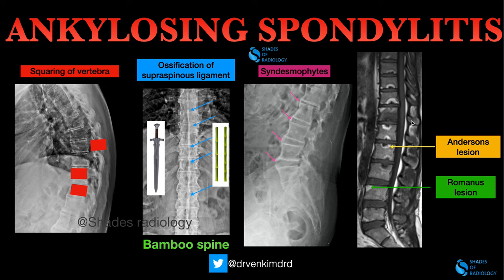Coming to the MR image, you can see here two types of lesions — Anderson and Romanus lesions — which are classic findings of ankylosing spondylitis.